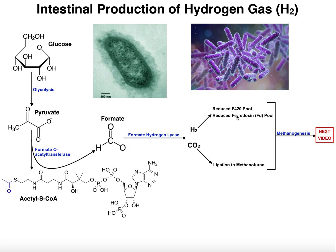Another molecule used to do reductions in methanogenesis is ferredoxin, which is actually present in humans. The hydrogen can also be used to reduce ferredoxin, which can then reduce other things in methanogenesis. So the ultimate goal of producing hydrogen gas is to generate a pool of reduced F420 and a pool of reduced ferredoxin — a reduced cofactor pool that can be drawn on to catalyze reactions in methanogenesis.